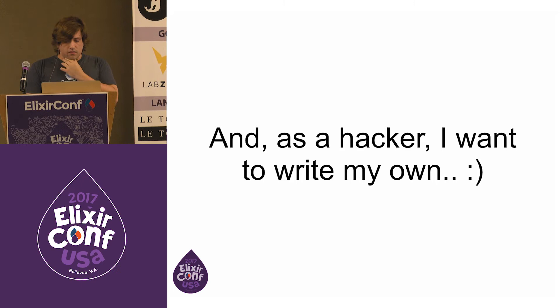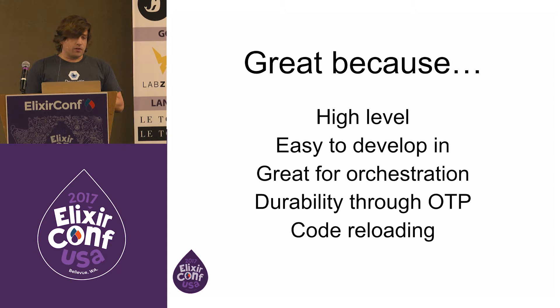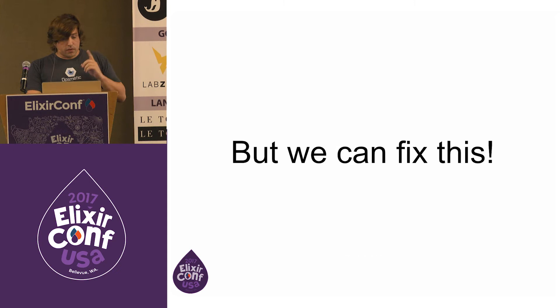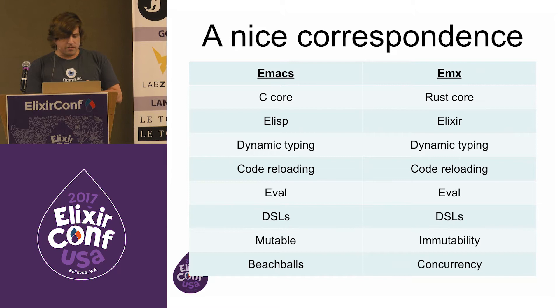And that's the whole reason I got into this. Now we have this great language that is simultaneously perfect and a terrible choice for doing this. It's great because it's high level, easy to develop in, great for orchestration — we've got the durability of OTP and code reloading. And it's terrible because the GUI ecosystem is pretty limited. It just hasn't been Erlang or Elixir's strength, and I have arrows in my back to prove it. But pioneers are the ones that get arrows in the back. We can fix this.